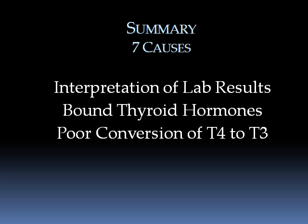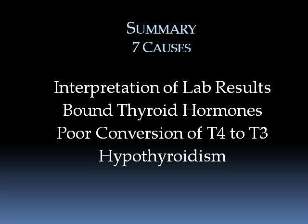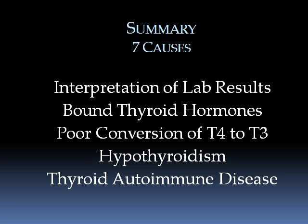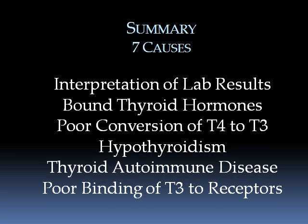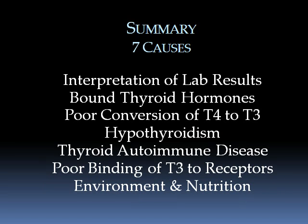The poor conversion of T4 to T3 is another cause. Conversion happens primarily in the liver, but also inside the cells, and certain nutrients are essential for conversion to the active T3 thyroid hormone. Hypothyroidism being treated with medication has already been covered in detail. Thyroid autoimmune disease is often not being diagnosed as an underlying cause. The poor binding of T3 to receptors inside our cells, and finally, environmental causes and poor nutrition are the remaining causes.